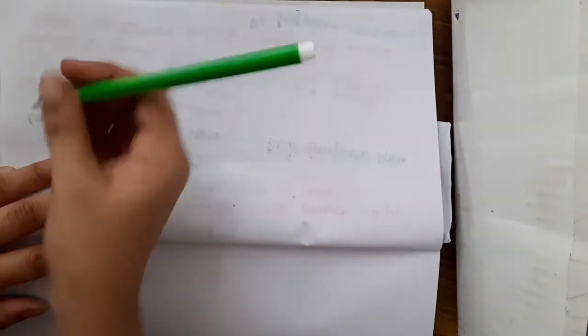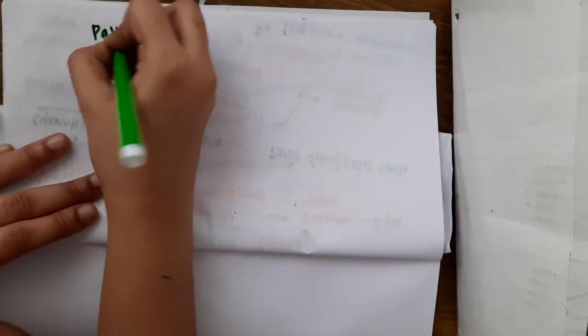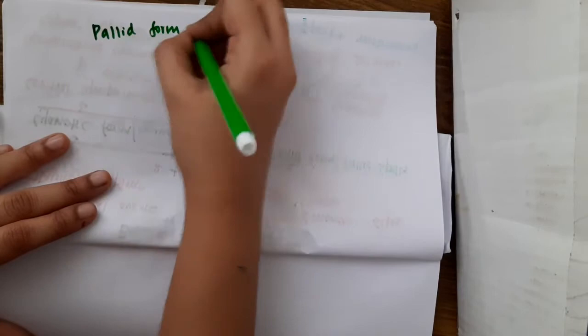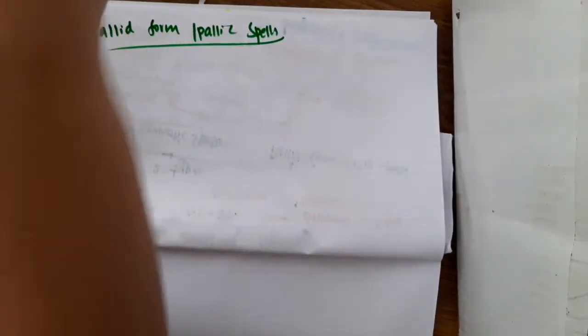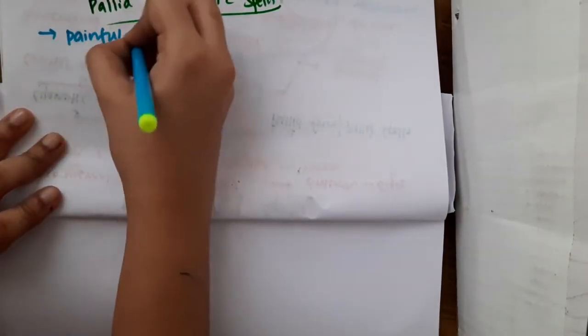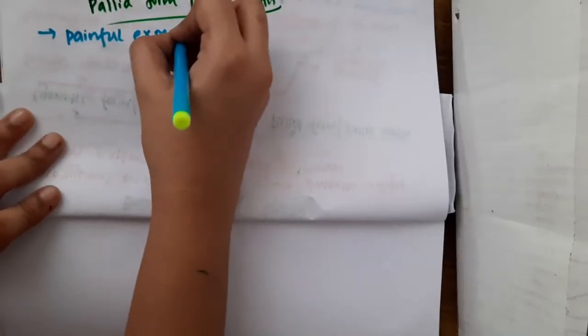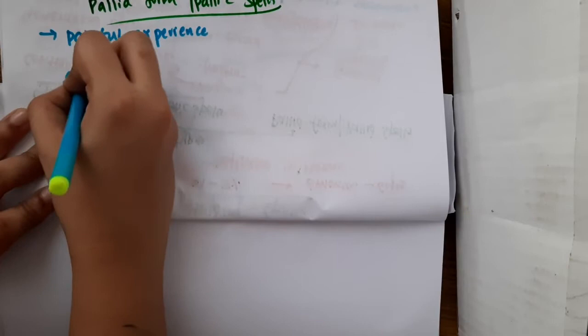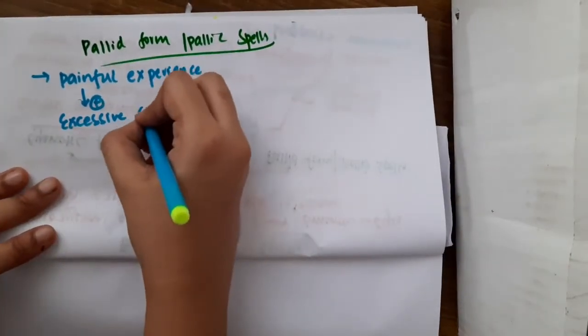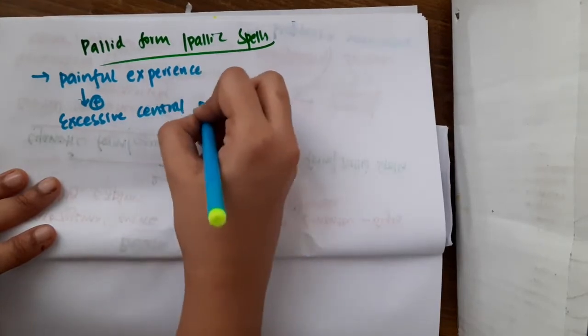Then the second form is pallid form or pallid spells. These pallid spells occur whenever the child has a painful experience. So this painful experience will activate the excessive central parasympathetic activity.